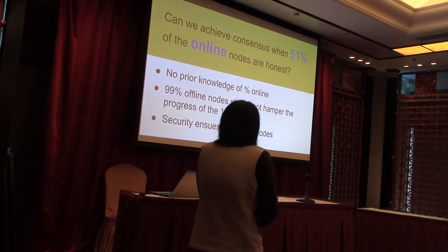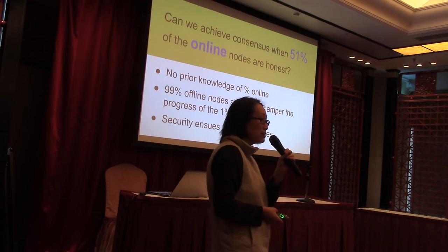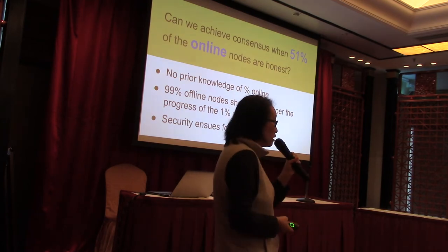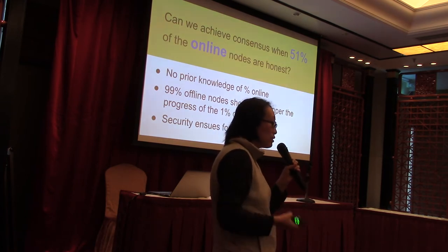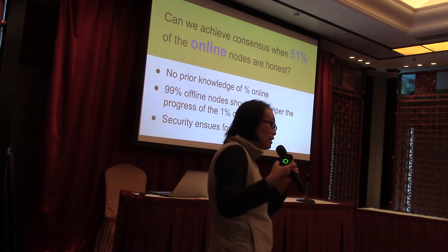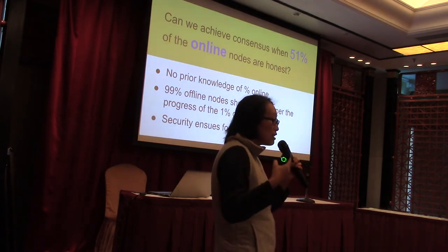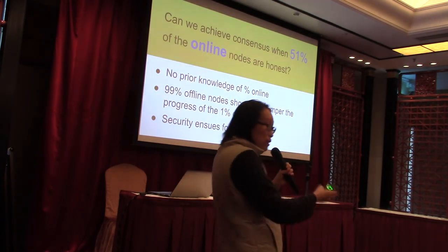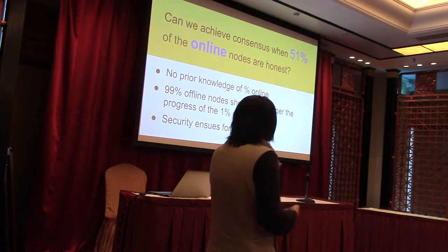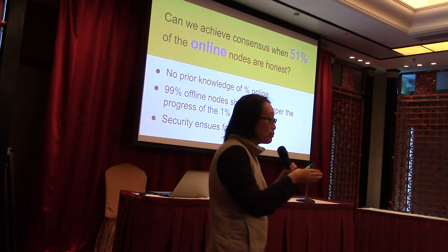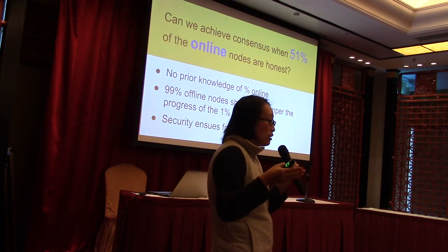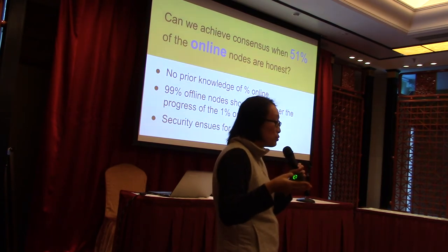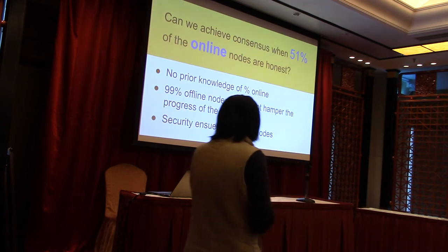There are implicit assumptions in this question. First, the protocol doesn't know how many nodes are going to show up — maybe only 1% show up instead of the expected 99%. Nonetheless, even if only 1% showed up, we want those nodes to still be able to reach agreement. And if you didn't show up in the beginning but join later, that's okay — as soon as you join, as long as you're an honest node, you should be able to enjoy consistency and liveness.